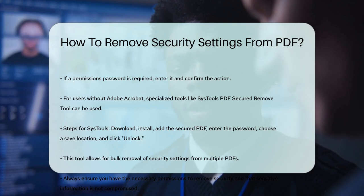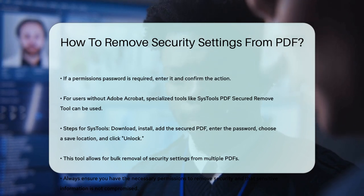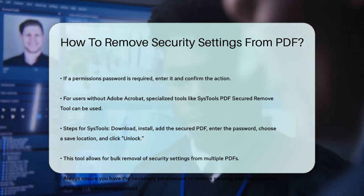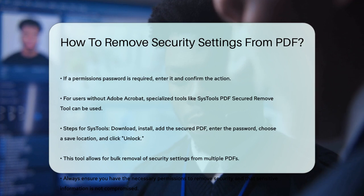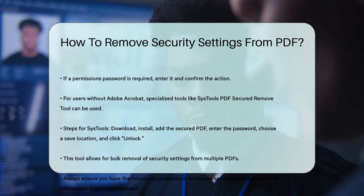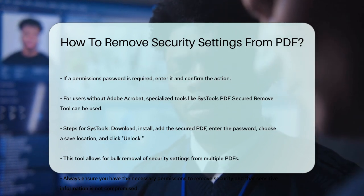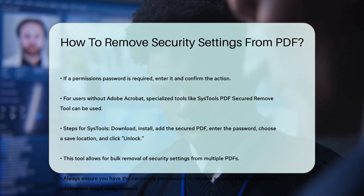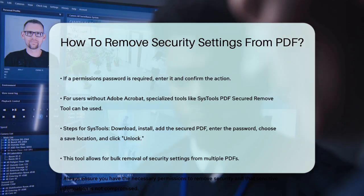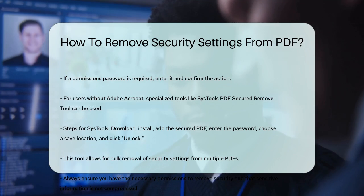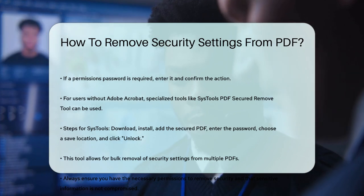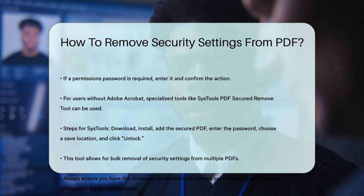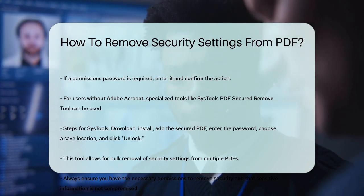Remember, to remove security settings from a PDF, you must know the password. If you've forgotten the password, you won't be able to use these methods, and you might need to contact the creator of the PDF or seek additional support from the software provider. By following these steps, you can easily remove security settings from a PDF, making it more accessible and easier to share or edit. Just ensure that you have the necessary permissions and that removing the security won't compromise sensitive information.